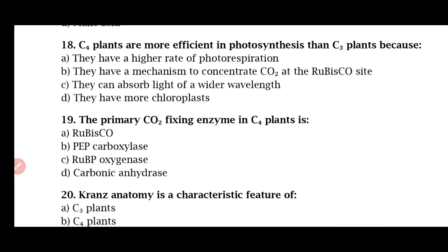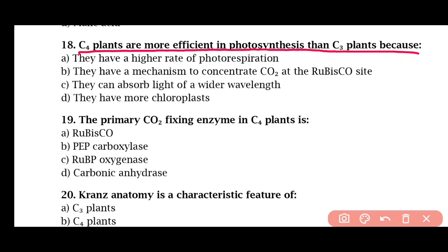Question 18: C4 plants are more efficient in photosynthesis than C3 plants because — they have a high rate of transpiration, they have a mechanism to concentrate carbon dioxide at the RuBisCO site, they can absorb light of a wider wavelength, or they have more chloroplasts. The correct answer is option B.